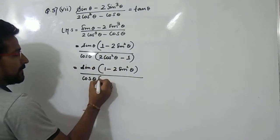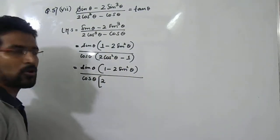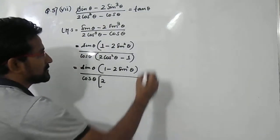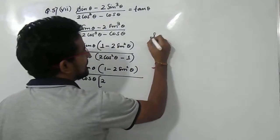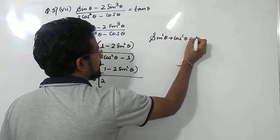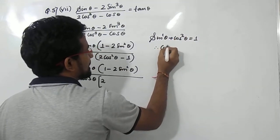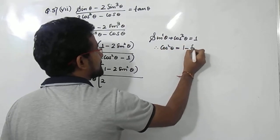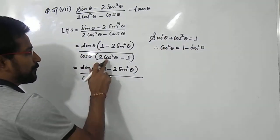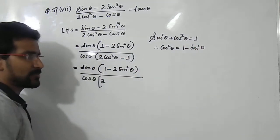Suppose we convert the denominator bracket — what is cos²θ? Cos²θ is nothing but 1 minus sin²θ, because we know that sin²θ plus cos²θ equals 1, so cos²θ equals 1 minus sin²θ. In place of cos²θ we write 1 minus sin²θ, so then numerator and denominator will both be in terms of sin.